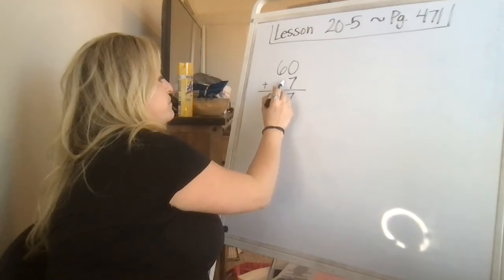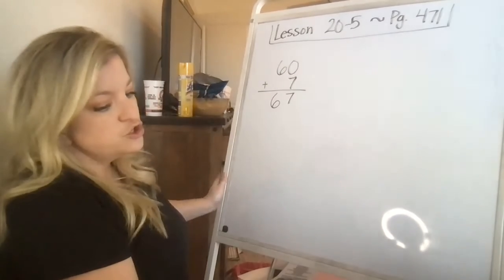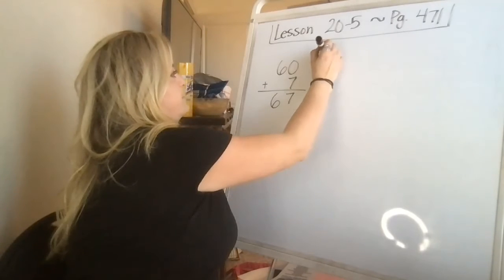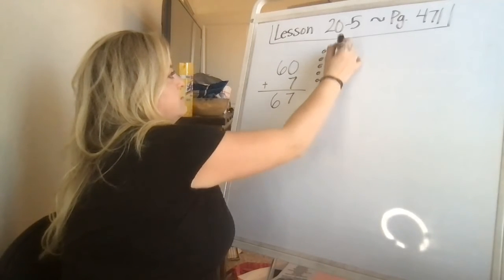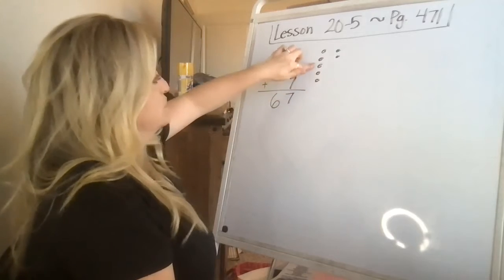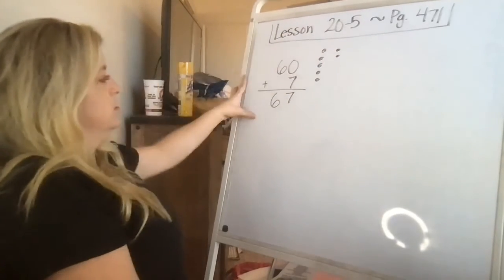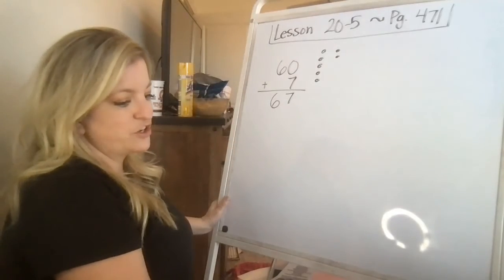Zero plus 7 is 7. And there's an invisible zero here, but 6 drops down and it's 67. You could also count on if you have these 7 dots. 60, 61, 62, 63, 64, 65, 66, 67. Okay, so he has 67 cookies.